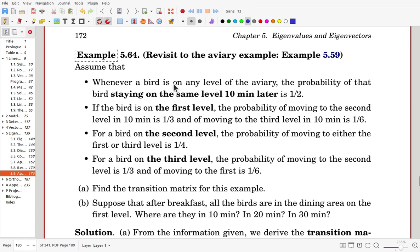Whenever a bird is on any level of aviary, the probability of that bird staying on the same level 10 minutes later is half. So, in one level with half probability, in 10 minutes later, again, the bird will be there. Now, for the first level, and the probability of moving to second level, in 10 minutes is one third, and moving to third level is one over six.